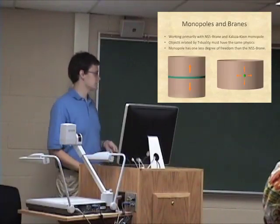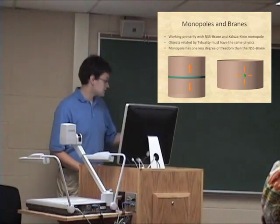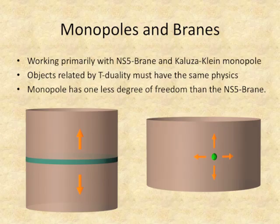Here are two objects that are T-dual to each other — the ones I've been working with primarily: the NS5 brane and the Kaluza-Klein monopole. Objects related by T-duality must have the same physics. As you can see by the arrows, the monopole can move up and down, and so can the NS5 brane — that's movement in our normal three dimensions. But the NS5 brane can also move around the extra dimension, just like that ant could. Whereas if you move the monopole around, it extends all the way around the extra dimension, so rotating it isn't going to do much.